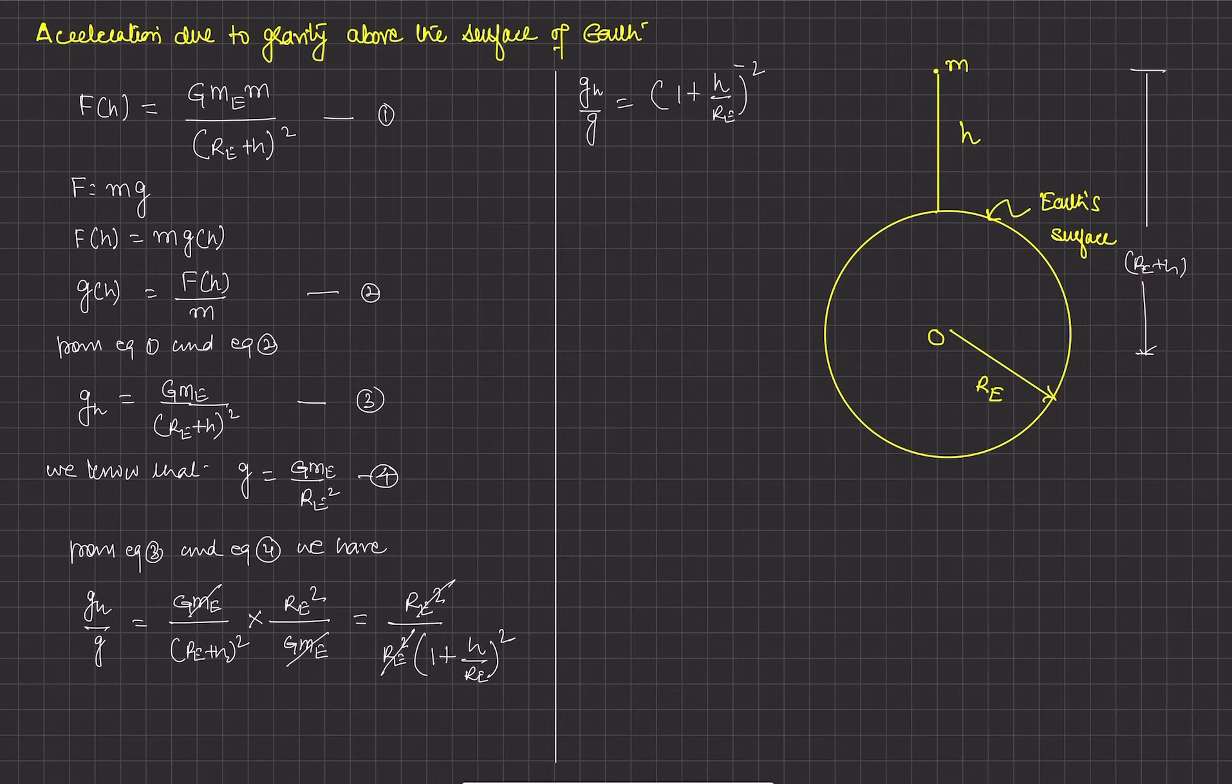After r_e squared cancels, we get g_h upon g equals (1 plus h upon radius of earth) to the power minus 2. By using binomial expansion: 1 plus x to the power minus n equals 1 minus nx plus n times (n plus 1) upon 2 factorial times x squared.